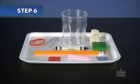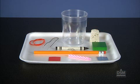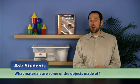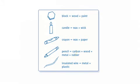Next, distribute a sorting tray of items and allow students time to examine the objects. Ask students, what materials are some of the objects made of? They should observe that some objects are made of one material, while others are made of more than one material. Challenge students to sort their objects into two piles: objects made of one material and objects made of more than one material.